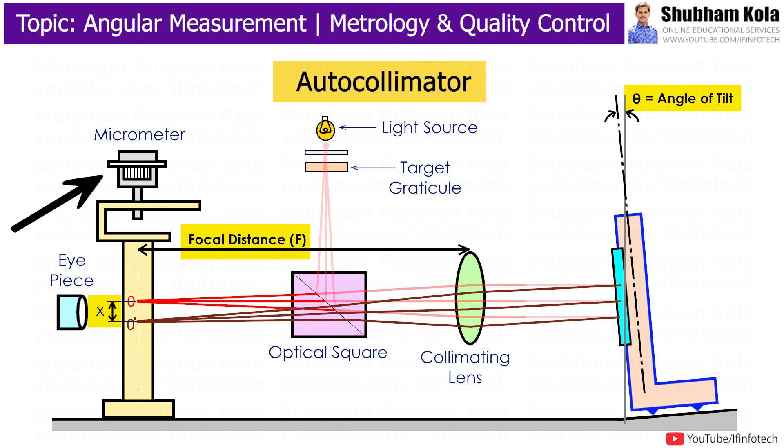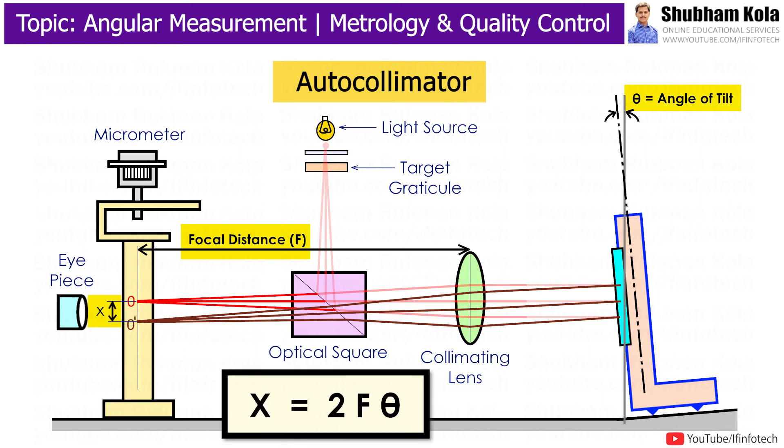From the diagram, the distance x is equal to 2f·theta, where f is the focal distance and theta is the angle of tilt.